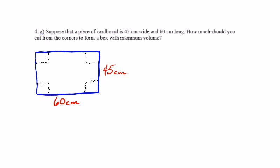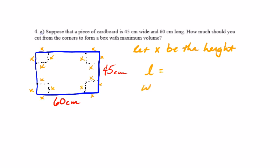We need to define a variable. We're going to say let x be the height, because it'll make life easier — we're going to write the length and width in terms of x. All of these corner squares are all x. When I cut out my squares, they should all be the same length — I'm cutting the same amount out from each side. We want to write an expression for the length and an expression for the width as well.